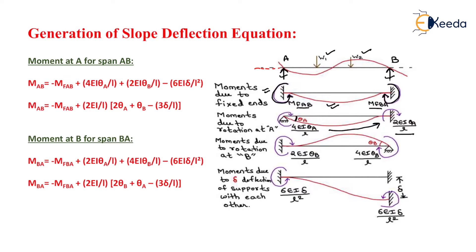In the next case, support A is considered as fixed and support B as a hinge. Due to the hinge support at B, there will be a rotation of theta B, producing a moment of 4EI·θB/L. The carry-over is transferred to the far fixed end at half magnitude, equal to 2EI·θB/L.